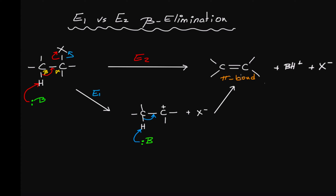This leads again to the alkene, which is the same product as the E2 mechanism. Now, what determines which mechanism the reaction will undergo? Unlike SN1 and SN2, for E1 and E2 only one factor determines the mechanism: the strength of the base. E2 favors strong bases, while a weak base will favor the E1 mechanism.